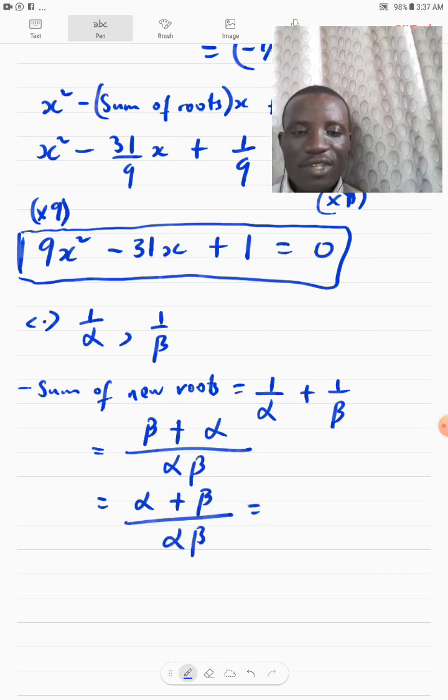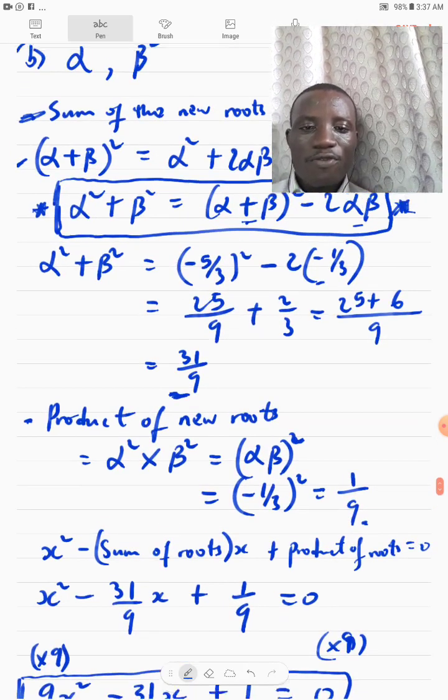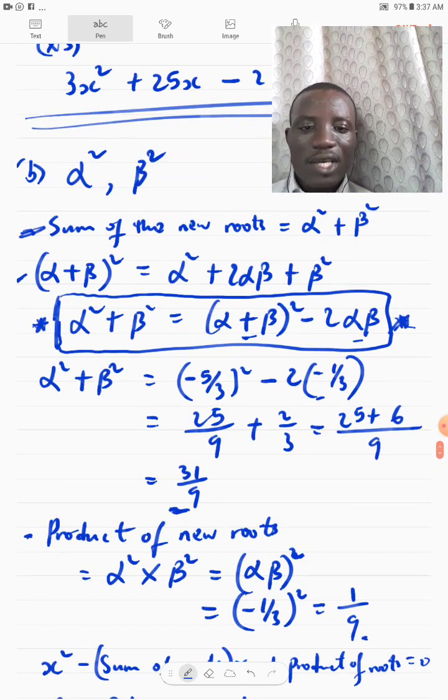And then, that will give me alpha plus beta over alpha beta. So, we already have this in sum of roots and product of roots. And we already know what our sum of roots is. We have just used it here also. Look at it. Alpha plus beta in the example B.